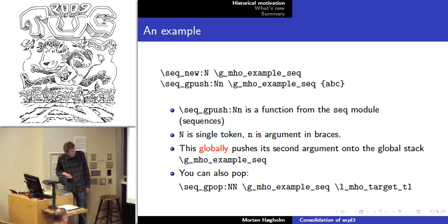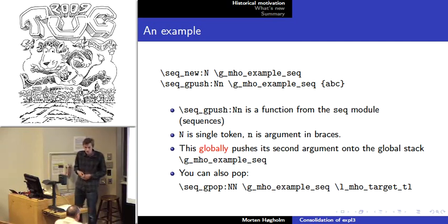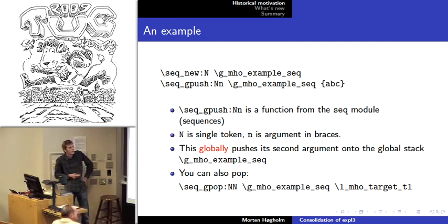We use G whenever things are done globally. So again, to keep the naming simplistic and intuitive. You can also pop. You're working on a global stack, so you'd better use a global pop operation. And then you store whatever you popped in that. And there are many, many functions for this. For stacks, sequences, also got decks not added to the repository yet, but it's there, fully functioning. And property lists that are immensely useful.